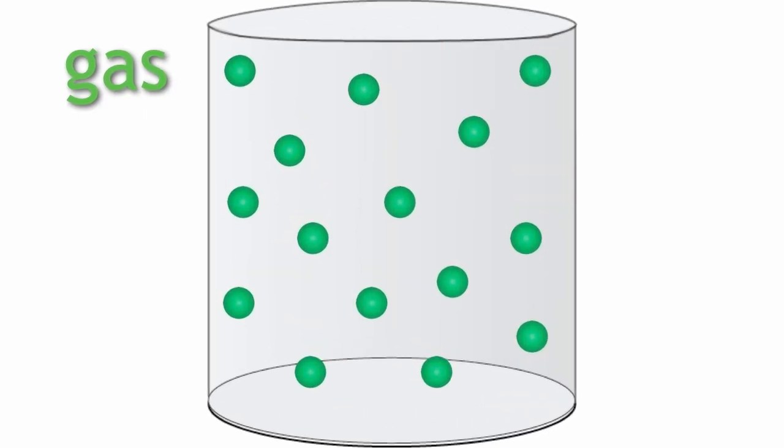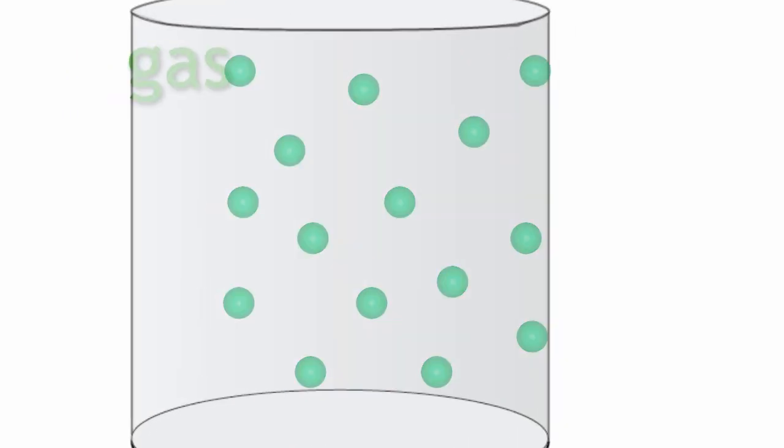This of course explains why a gas takes the shape of its container. It's because the particles will each continue to travel in a straight line until they hit something, in this case the wall of the container.